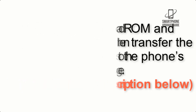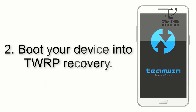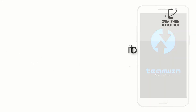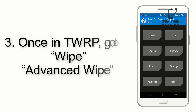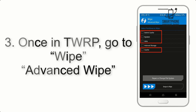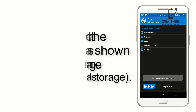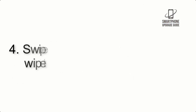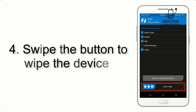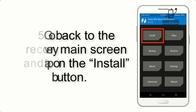Step 2: Boot your device into TWRP recovery. Once in TWRP, tap on Wipe, then Advanced Wipe, and select the checkboxes as shown in the image, excluding internal storage. Step 4: Swipe the button to wipe the device. Step 5: Go back to the recovery main screen and tap on the Install button.